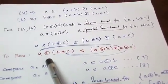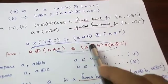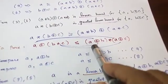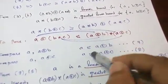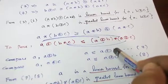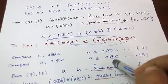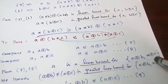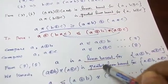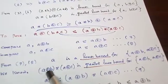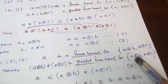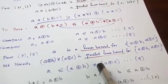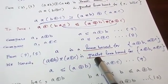Similarly, we need to prove A+(B★C) ≤ (A+B)★(A+C). Compare A with A+B and A with A+C: A is less than or equal to A+B, and A is less than or equal to A+C. So A is a lower bound for A+B and A+C. The standard greatest lower bound is (A+B)★(A+C), so comparing, A is less than or equal to (A+B)★(A+C) since the latter is the greater element.